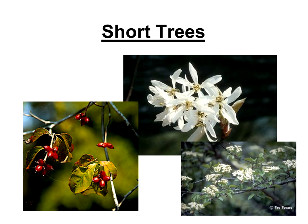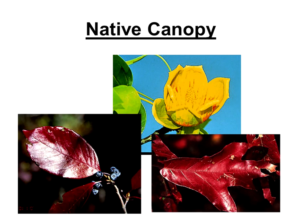Moving up in structural layers to short trees — flowering dogwood is a fabulous wildlife plant with dozens of species eating the fruits when they're available. Service berry or June berry, in the genus Amelanchier, provides fruits early in the season, a late spring fruit producer, so you can address seasonality by adding it to the garden. And there are viburnum species that get quite tall, showing up in different layers of your plant community.